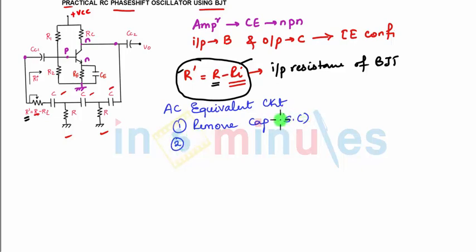Then remove DC sources - that means this VCC will be grounded, this capacitor will be shorted, this will be shorted, so RE will be redundant. This will be shorted.